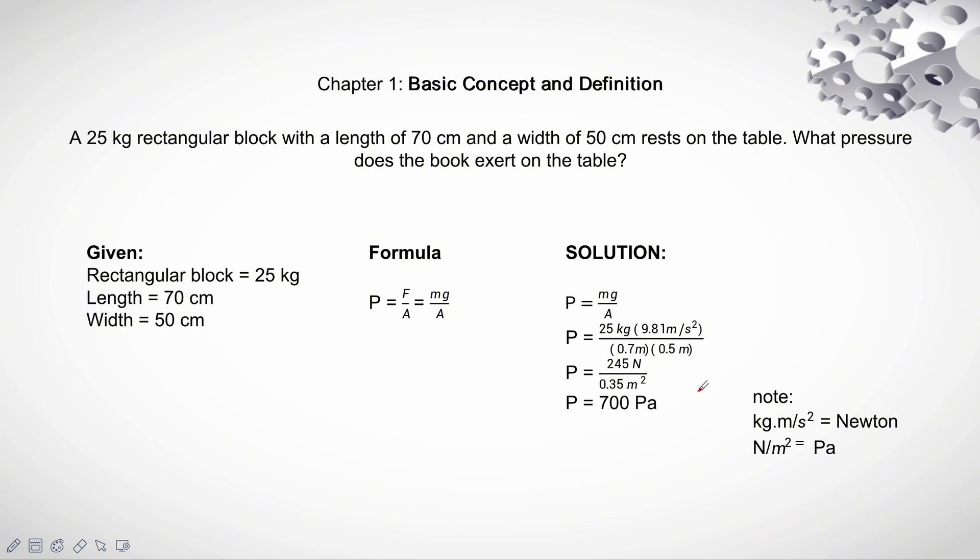P equals 245 N over 0.35 m squared. So, our final answer is pressure equals 700 Pascals.